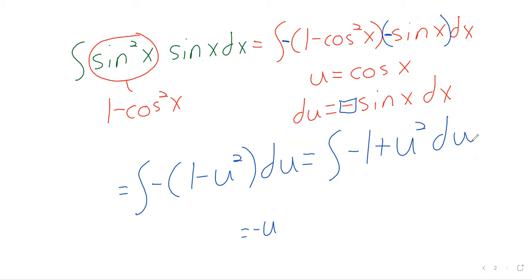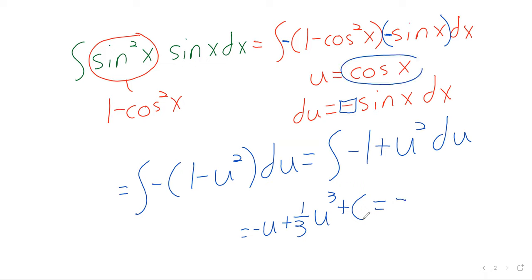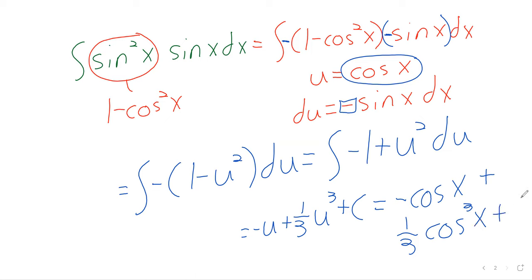Integrating gives negative u plus one-third u cubed plus C, which is negative cosine of x plus one-third cosine cubed of x plus C. Voilà.